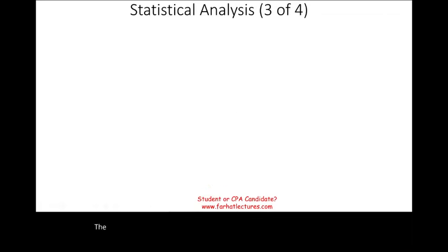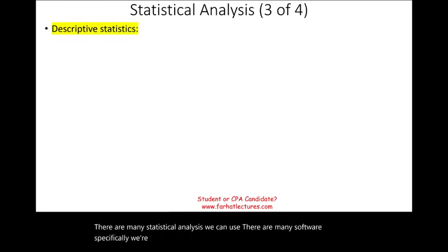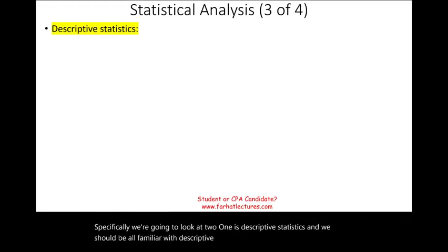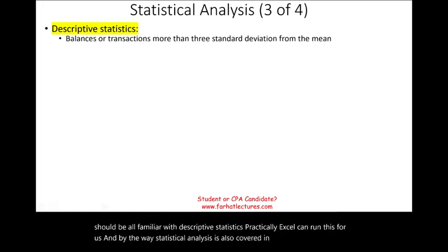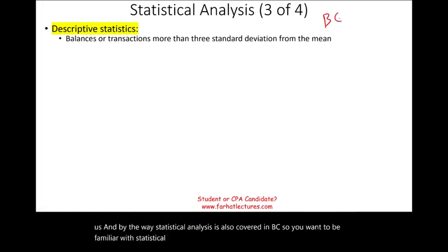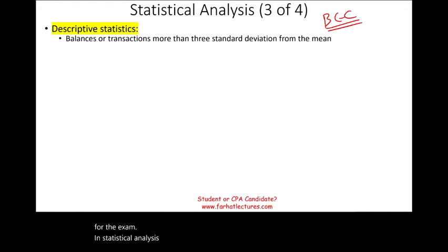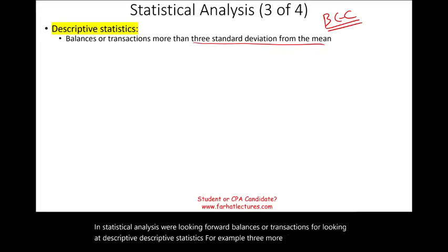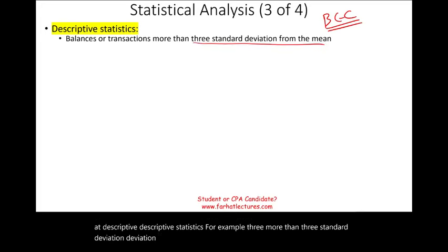The third tool we can use in our risk assessment using ADA is statistical analysis. There are many statistical analyses we can use, and many software options. Specifically, we're going to look at two. One is descriptive statistics — we should all be familiar with this; Excel can run this for us. Statistical analysis is also covered in BEC. In statistical analysis, we're looking for balances or transactions — for example, more than three standard deviations from the mean. They're outliers.